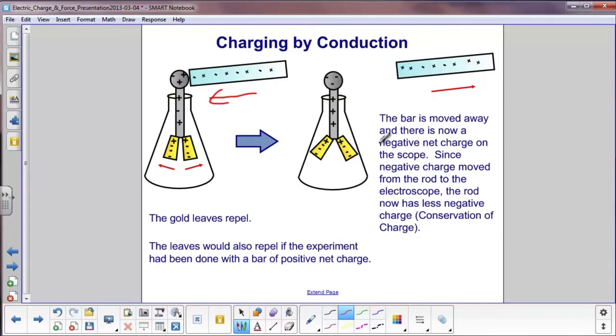So now you have a net negative charge on the electroscope. Now, the other interesting point is the rod here now has less negative charge than when it started because it gave some of it up to the electroscope. And because of the conservation of charge, if this gains negative charges, this must lose the negative charges.